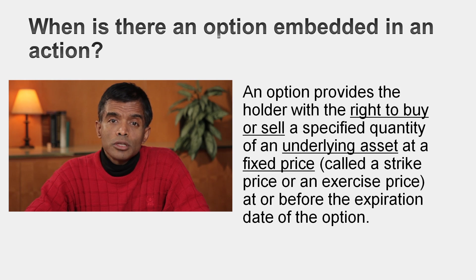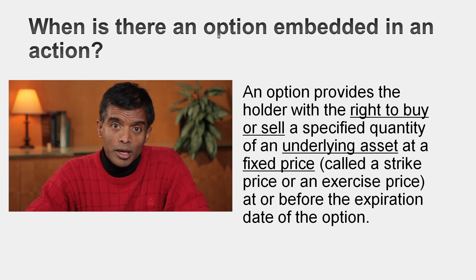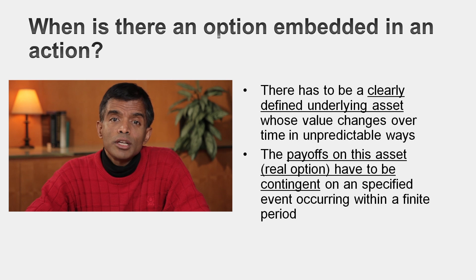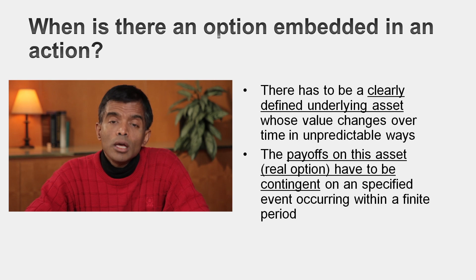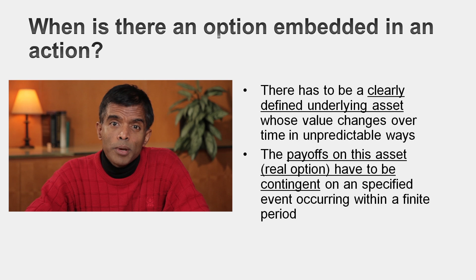There are three specific characteristics I look for to identify something as an option. First, options are derivative securities — they derive their value from something else, so there's got to be an underlying asset. Second, options have contingent payoffs — something has to happen for your cash flow to pay off. And third, options have limited lives. In fact, the best way to recognize when you're dealing with an option is to draw the payoff diagram for your cash flows, and if it looks like an option payoff diagram, you have an option on your hands.